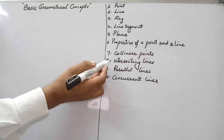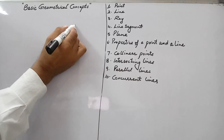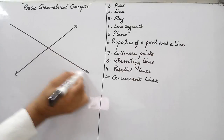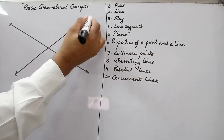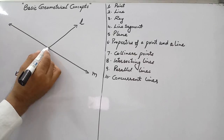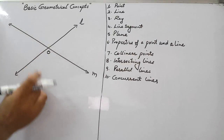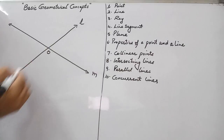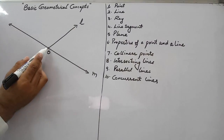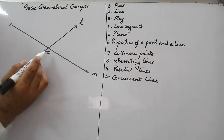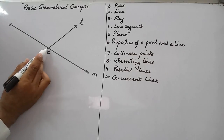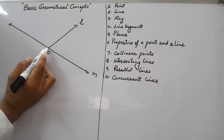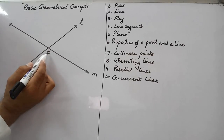Next is intersecting lines. Two lines in a plane which cut each other are called intersecting lines. Suppose this is line L and this is line M, and these are cutting at point O. Two lines in a plane which cut at one point are called intersecting lines, and this point where they cut each other is called the point of intersection.